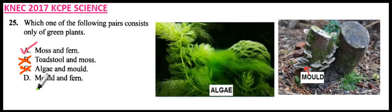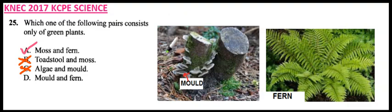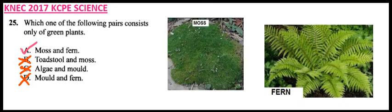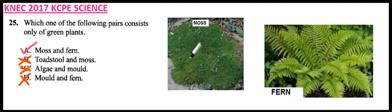And finally, we have mold and fern. We have already seen the fern, but we can still compare the two. The mold is white, the fern is green, and therefore D is not correct either. So A is the correct answer, which consists of moss and fern. It is very important to differentiate these plants so that you can answer questions related to this. Thank you.